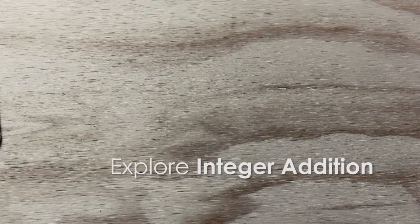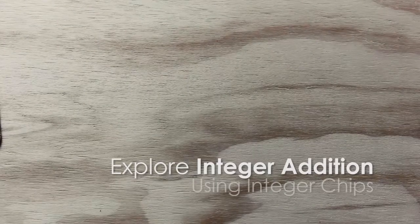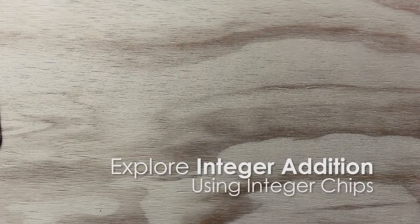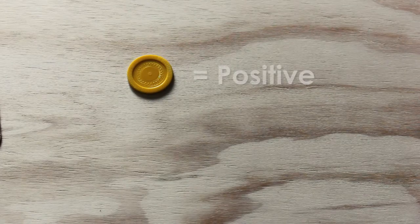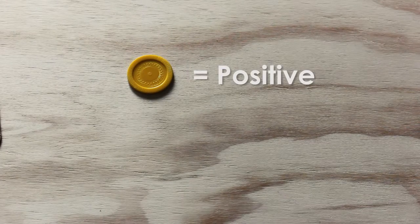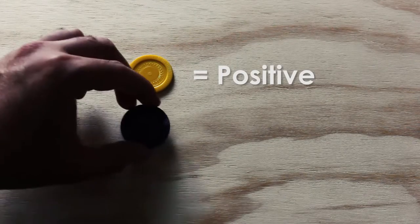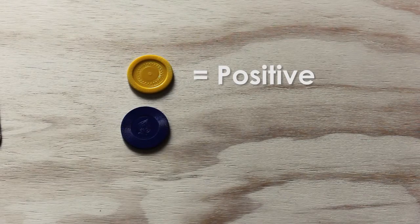In this video, we're going to explore integer addition using integer chips. To start off, we'll need two different colors of chips. I'm going to use yellow chips to represent positives, and I'm going to use blue chips to represent negatives.